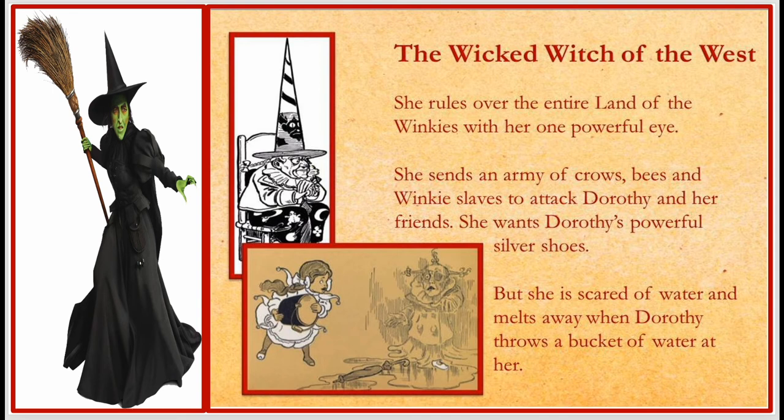The Wicked Witch of the West rules over the entire land of Winkies with her one powerful eye. She sends an army of crows, bees, and Winky slaves to attack Dorothy and her friends. She wants Dorothy's powerful silver shoes. However, she is scared of water and melts away when Dorothy throws a bucket of water at her.